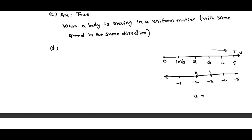So this is point A and suppose this is point B. Final velocity at A minus velocity at B, divided by time interval. So: minus two minus minus three, divided by some time — this gives plus one by T, that means it is a positive value. So the answer here is false.